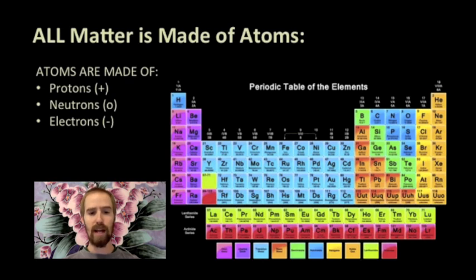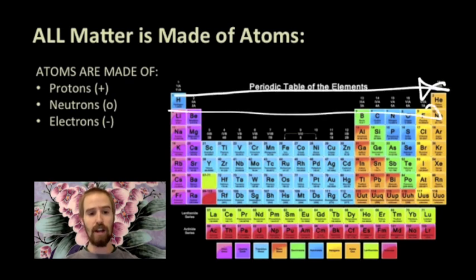So all atoms are made of these three subatomic particles, just in different quantities. The main difference between atoms comes from how many protons they have in the nucleus. And as we read the periodic table from left to right, and top to bottom, the number of protons in the nucleus increases.